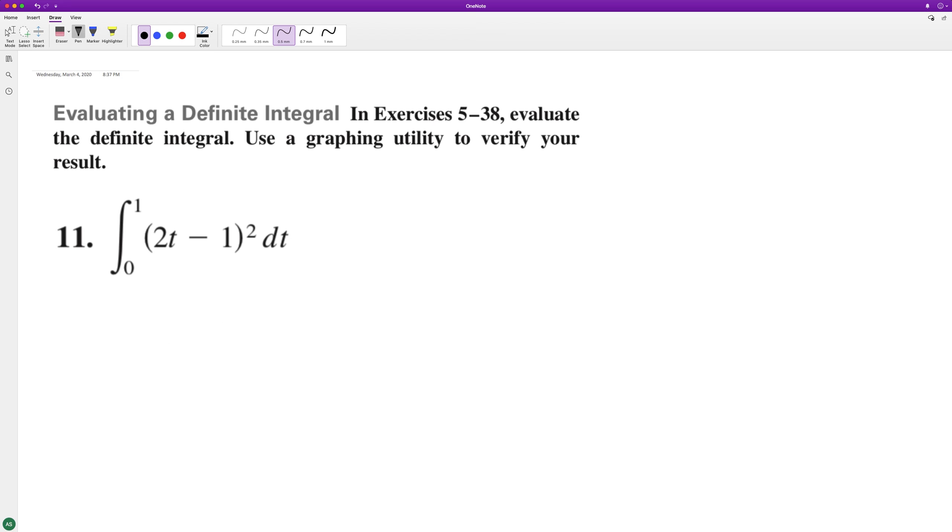Let's integrate the following from 0 to 2. So we can actually just go ahead and FOIL this out. We'll get 4t squared minus 4t plus 1. That should work, and then we'll go ahead and integrate that.